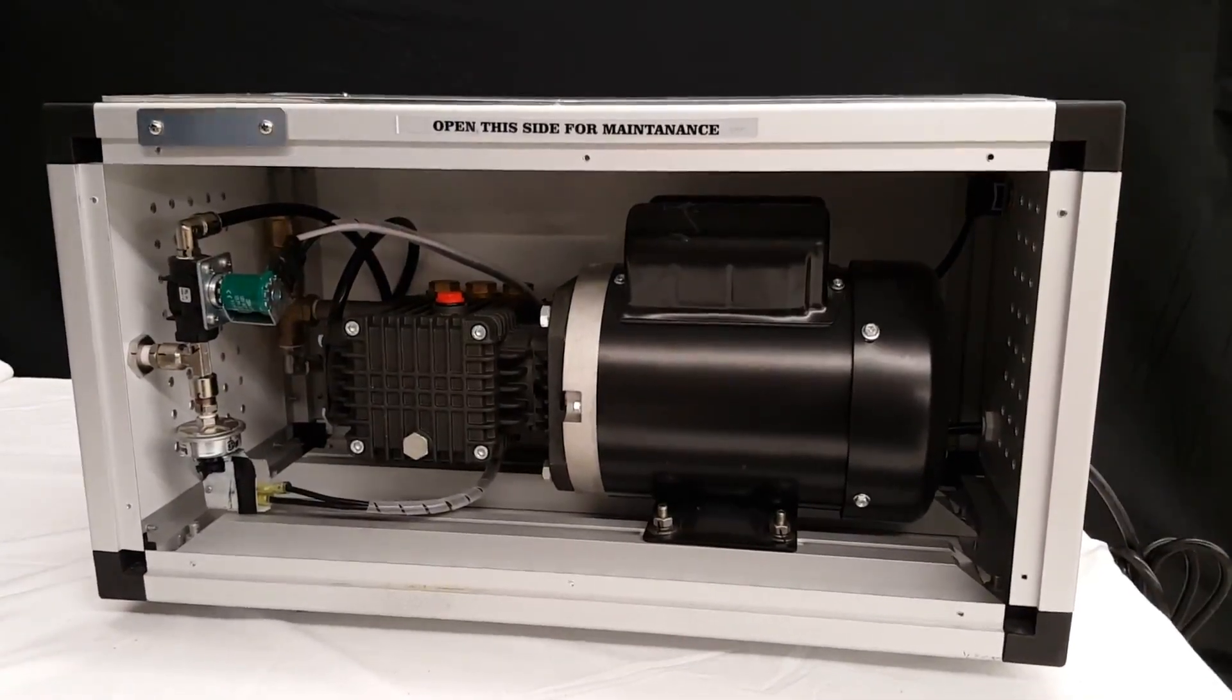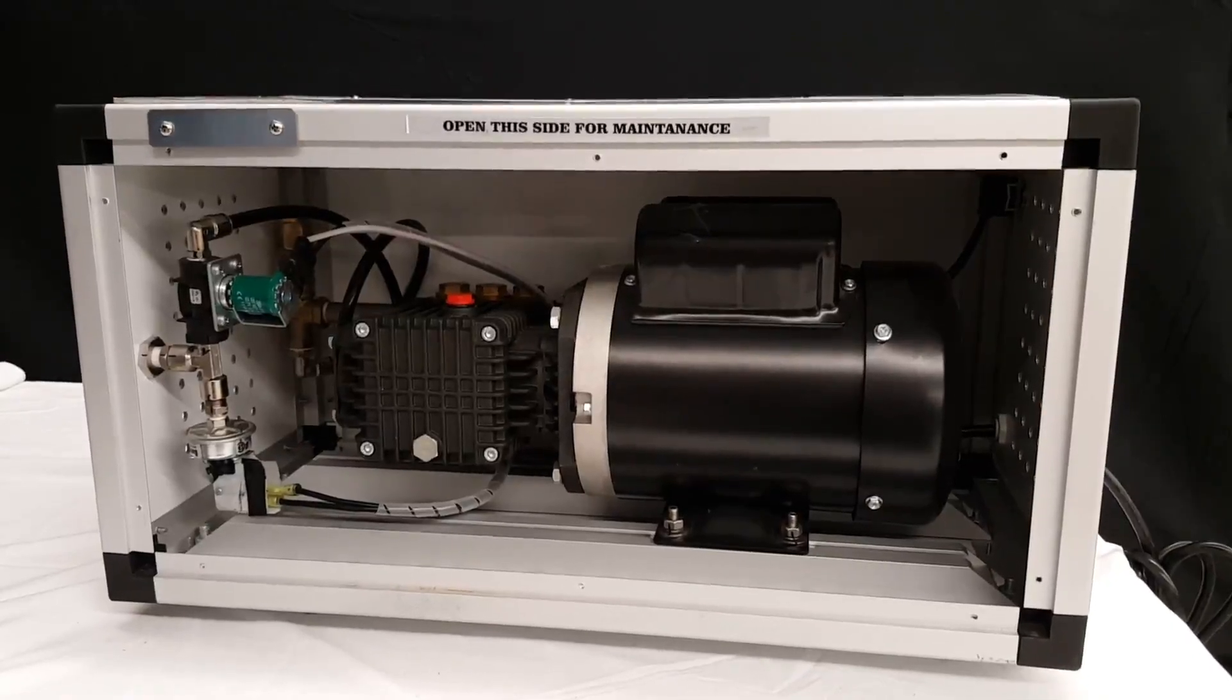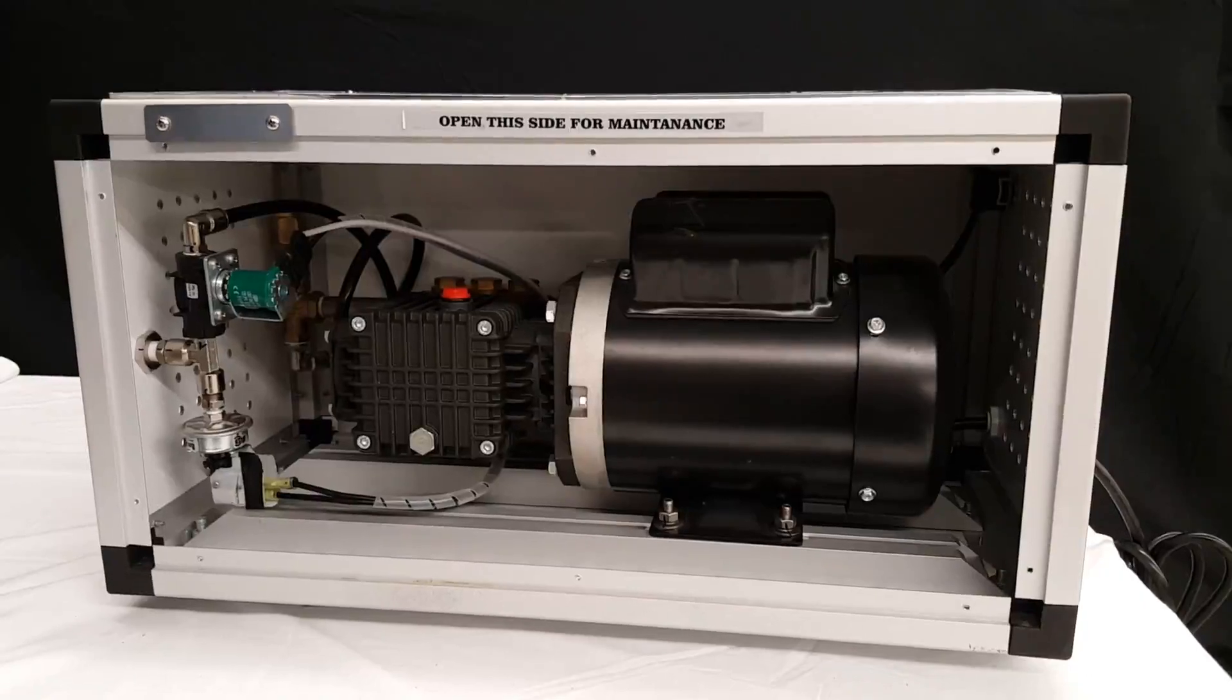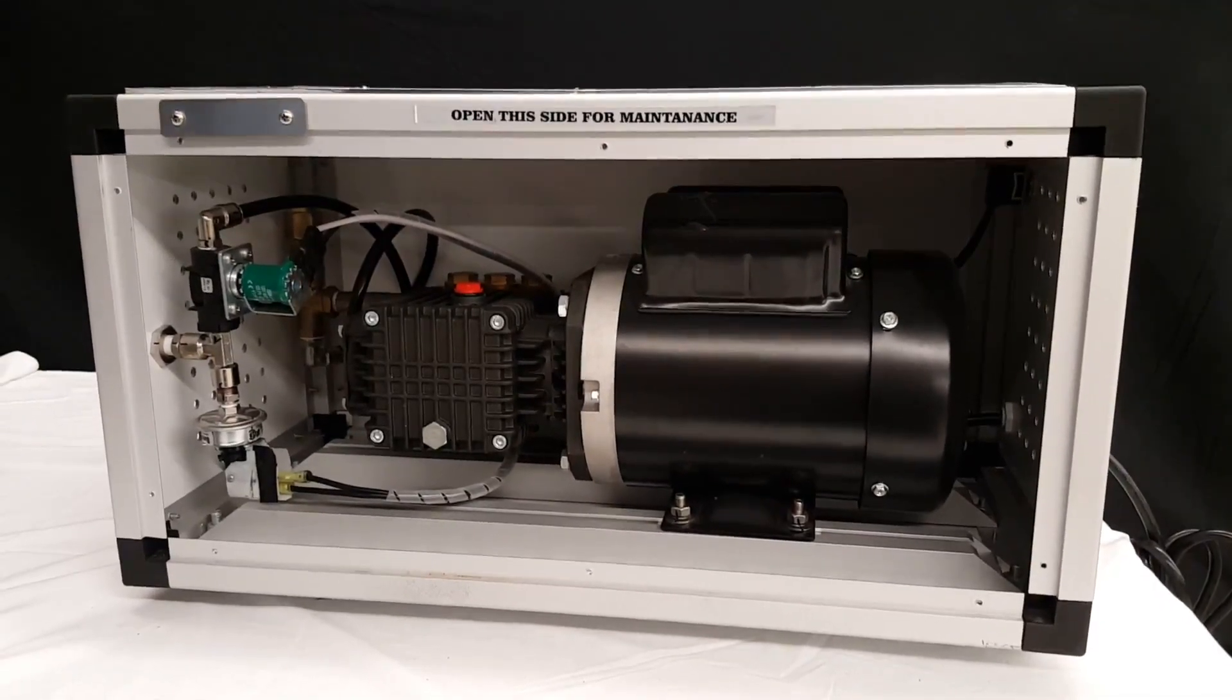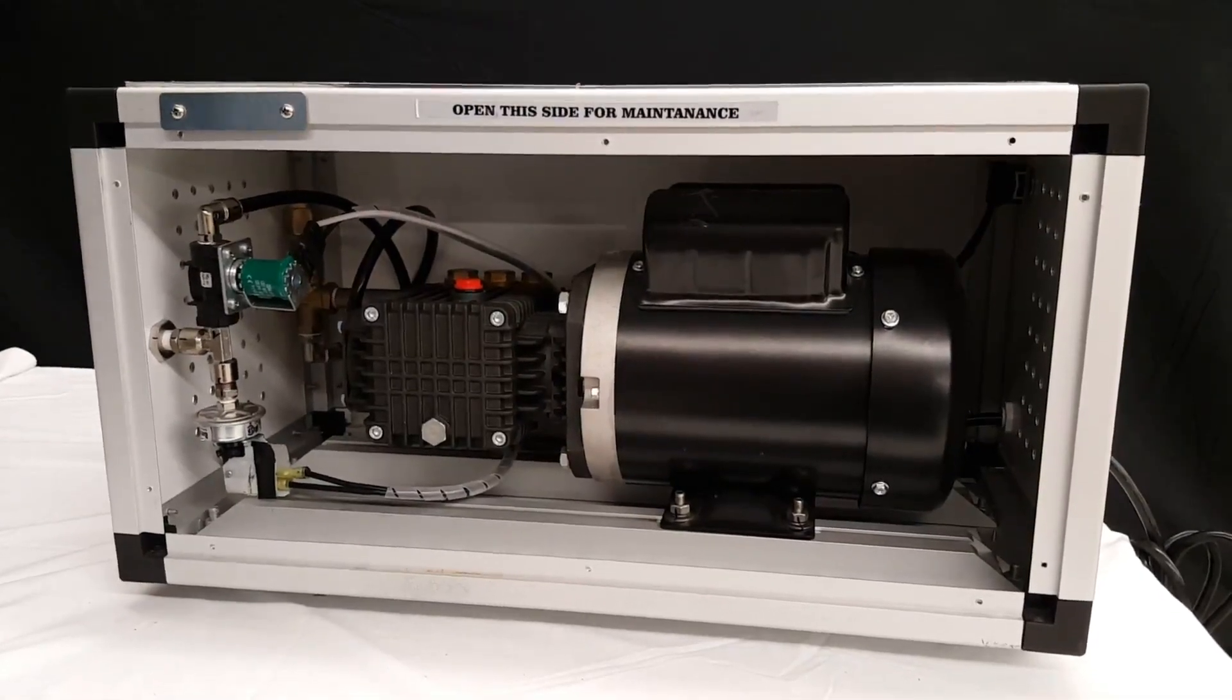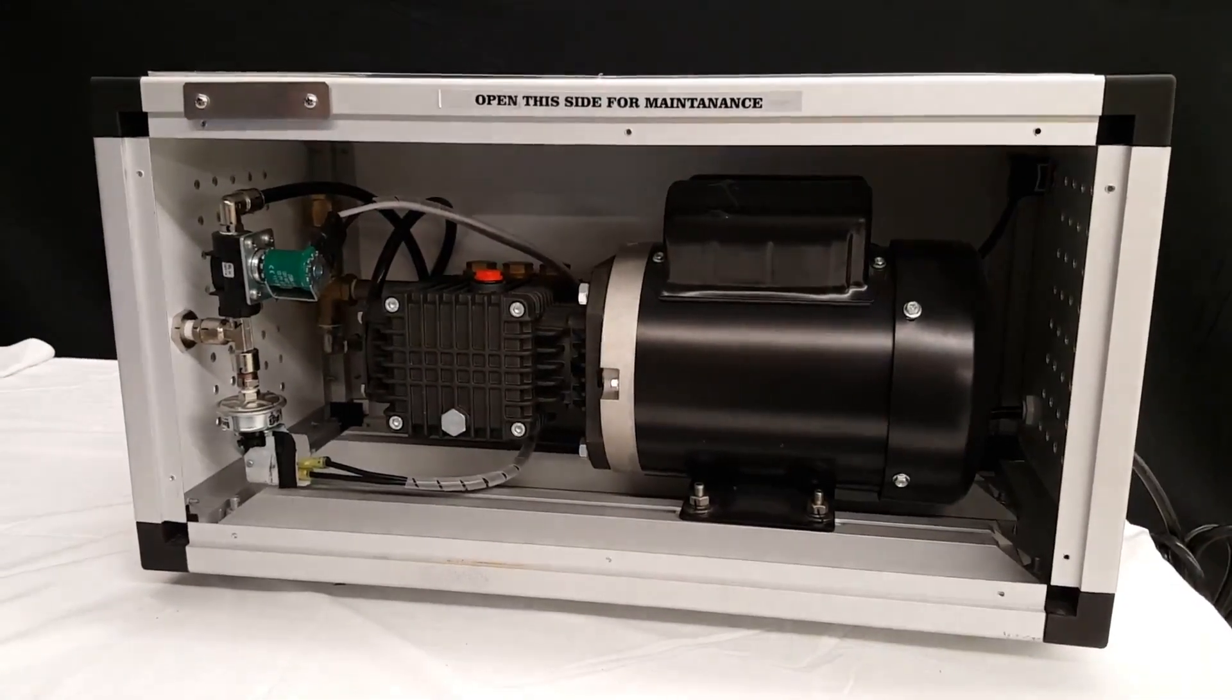This video shows you how to bypass the pressure switch on our 1500, half gallon, one gallon, and two gallon pumps. If your pump does not come on by turning on the toggle switch, you may want to try this process.